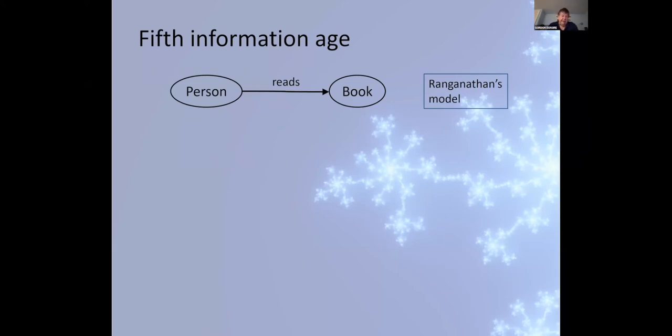The Fifth Information Age is a development from the very simple model of S.R. Ranganathan, the founder of modern library science. Ranganathan's model is extremely simple and can be stated in the famous rule: to every reader their book. That means that each person who wishes to read a book should be able to find the book that they wish to read and then obtain it to read.